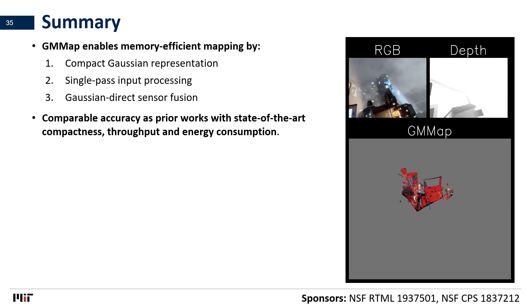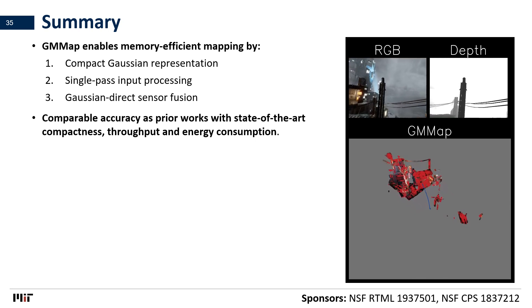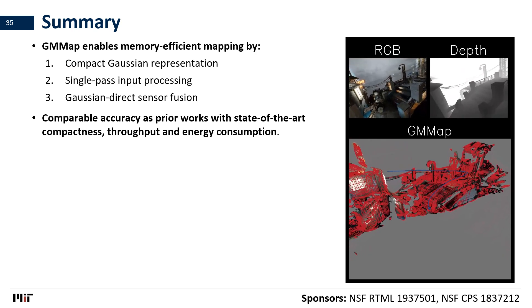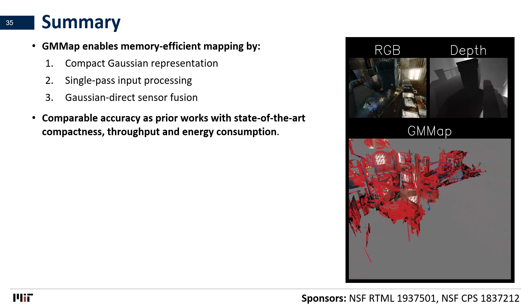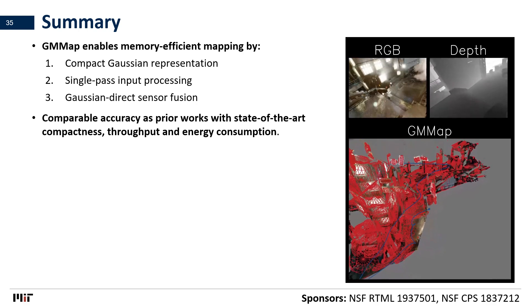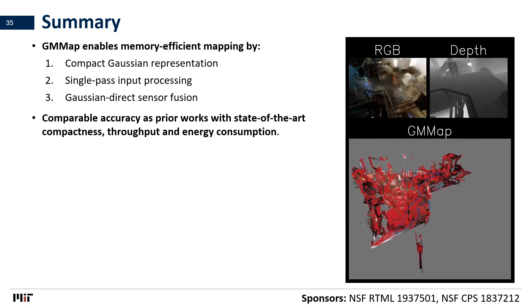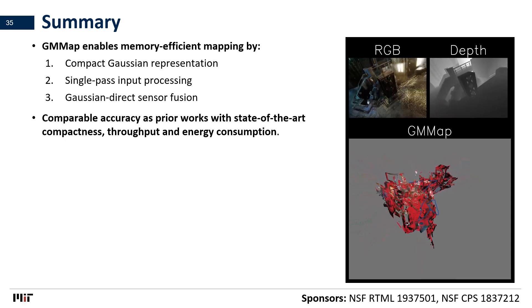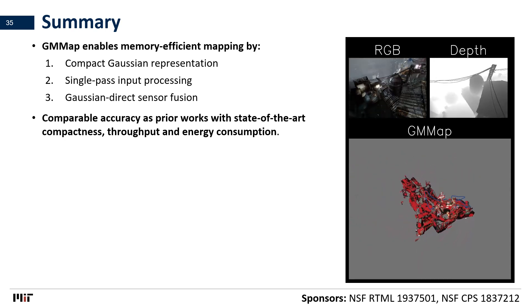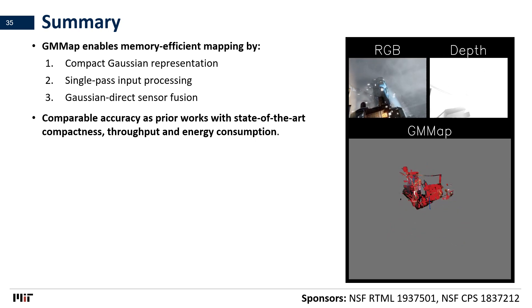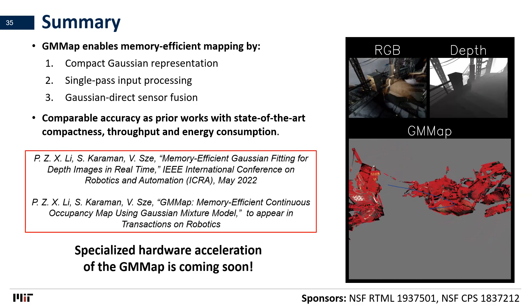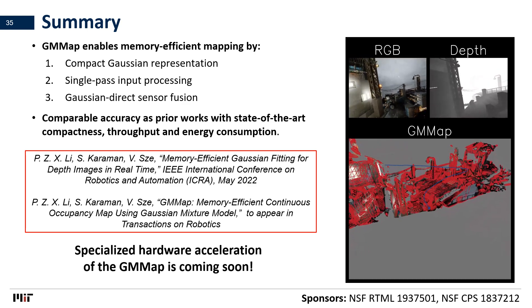In conclusion, GM map is a novel Gaussian-based mapping framework that achieves state-of-the-art compactness while maintaining comparable accuracy as prior works. More importantly, GM map can be constructed in a memory-efficient manner due to novel algorithms that enable single-path input processing and Gaussian-direct sensor fusion without ray casting. Our GM map not only enables real-time 3D mapping on energy-constrained devices such as micro-robots, smartphones, and headsets, but also illustrates the significance of memory-efficient algorithms for enabling other exciting applications on those devices. Please check out our conference and journal paper — we look forward to presenting our specialist hardware architecture for GM map in the future. Thank you.